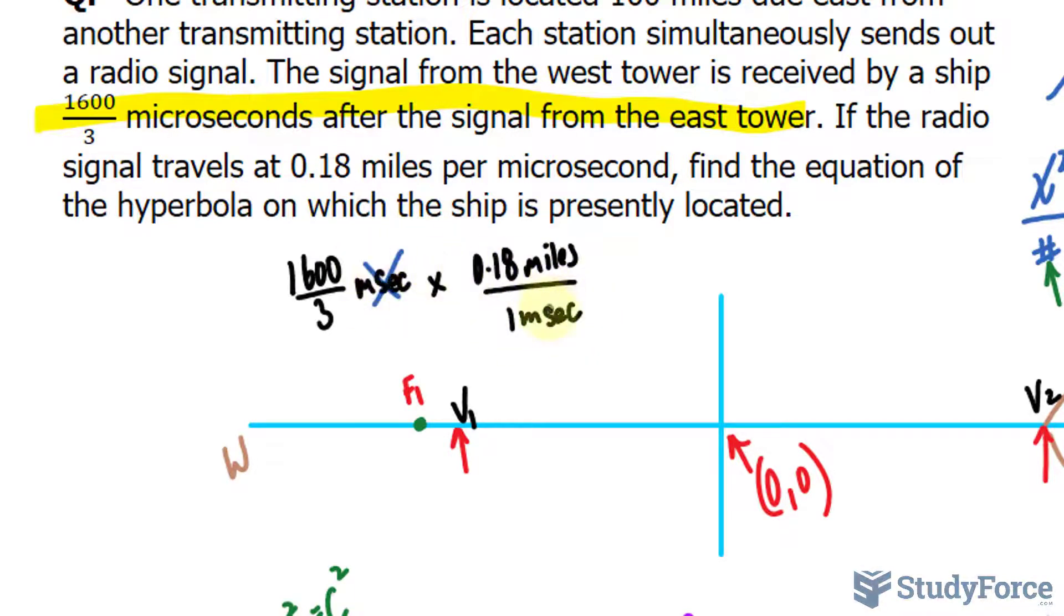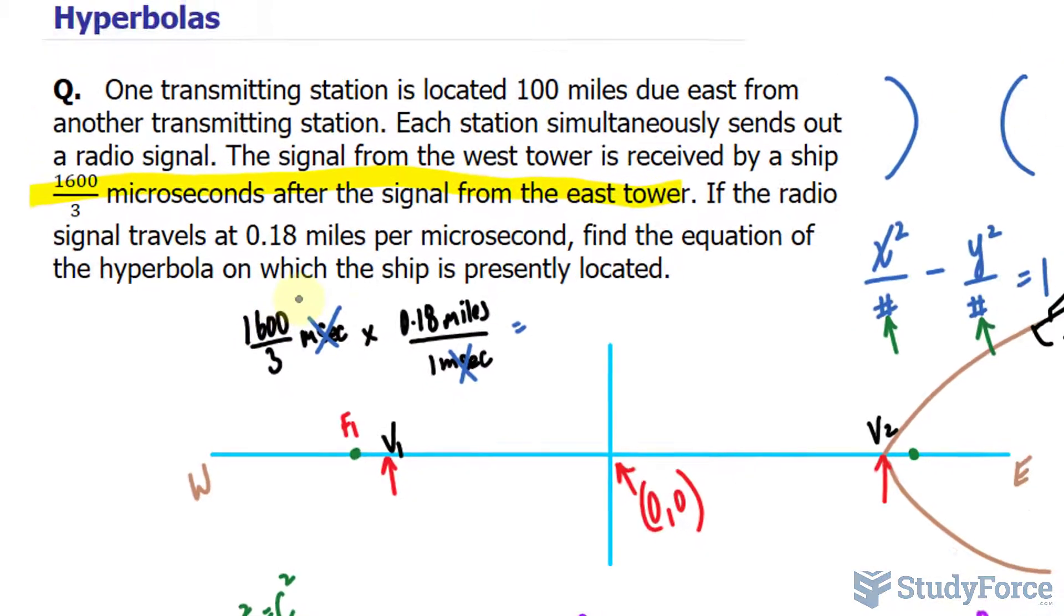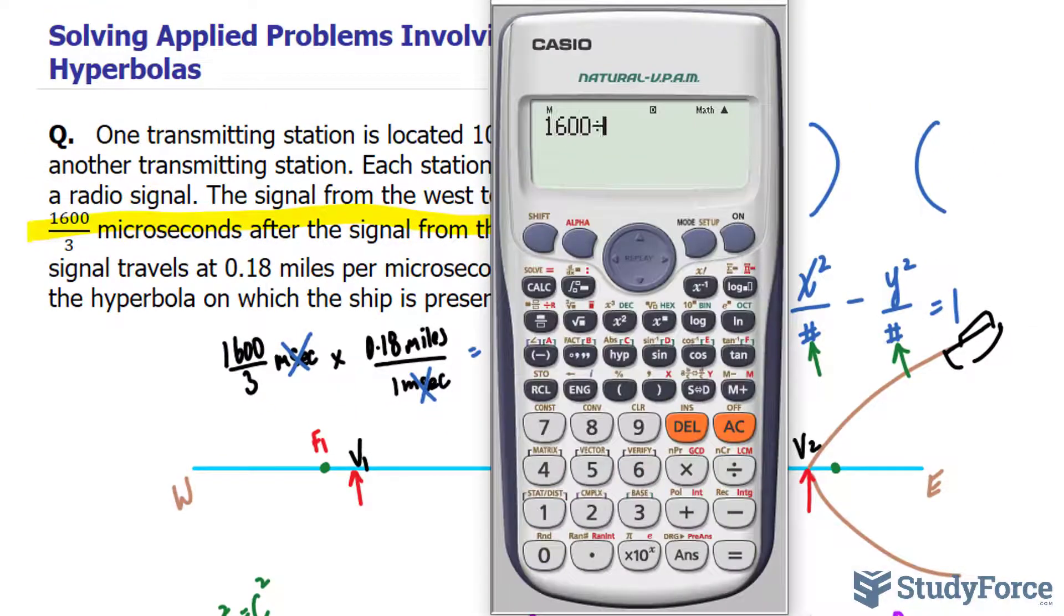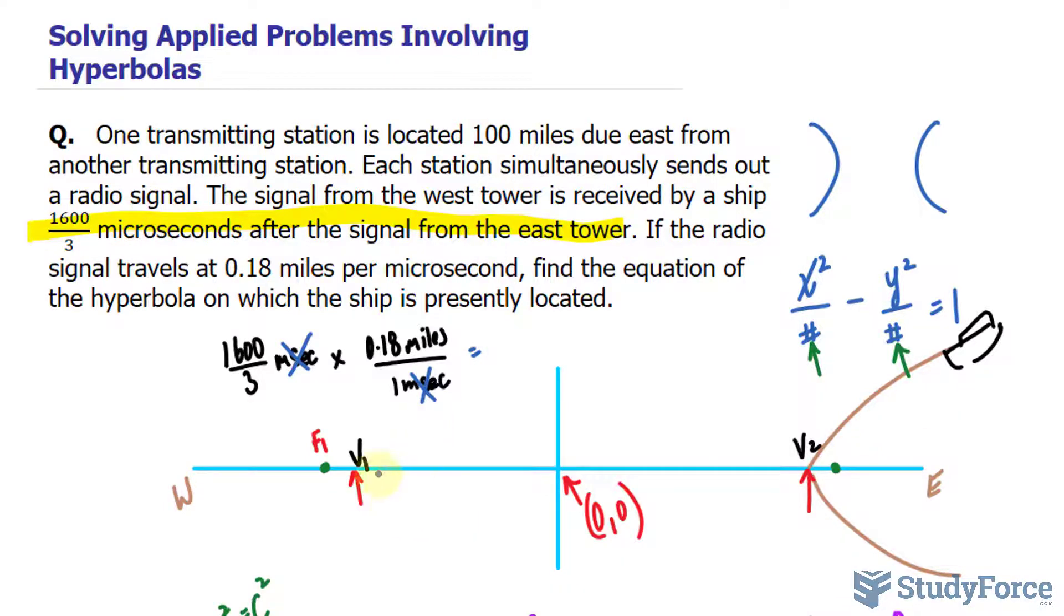This unit and this unit will cancel out. And if we multiply 1600 over 3 times 0.18, we get the distance between the two vertices, which is 96. So the distance from here to here is 96.